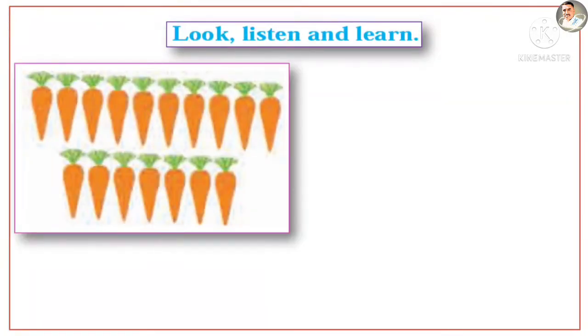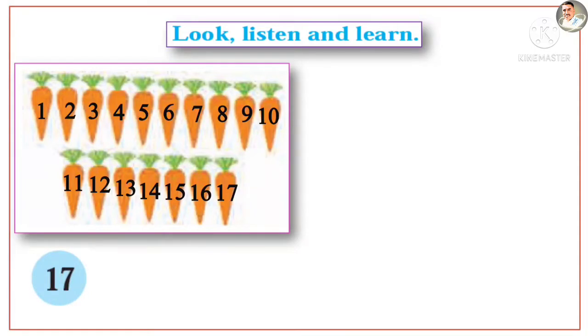How many carrots are there? 17. Seventeen. S-E-V-E-N-T-E-E-N. 17 carrots.